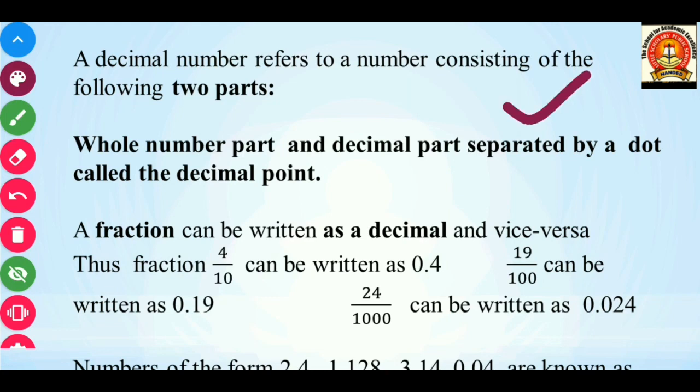A decimal number refers to a number consisting of two parts. The first is the whole number part and the second is the decimal part. As we know, a fraction can be written as a decimal and a decimal can be represented as a fraction.